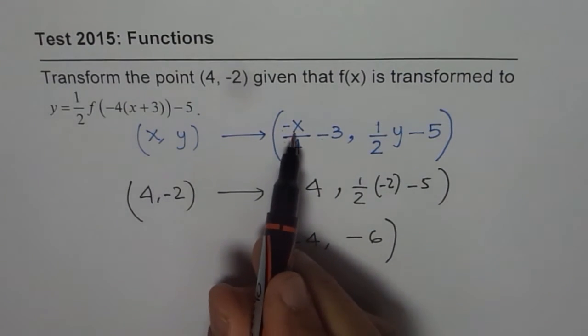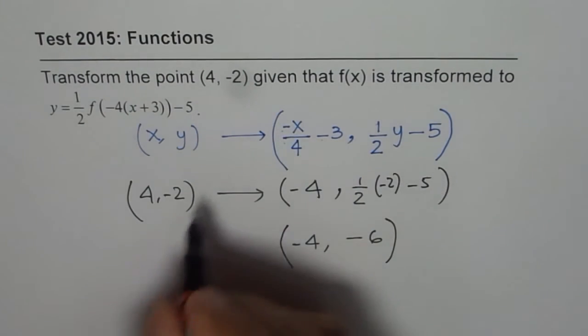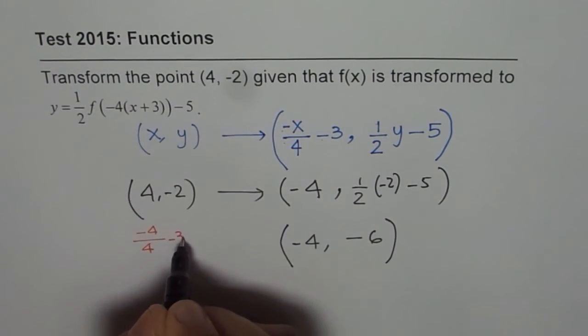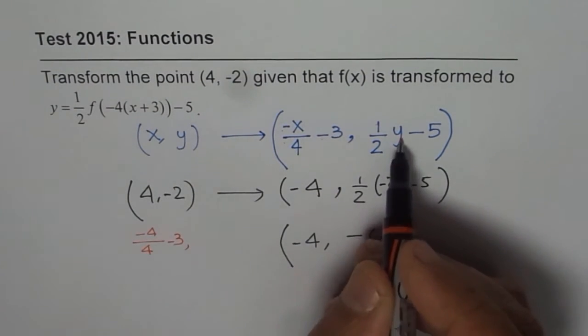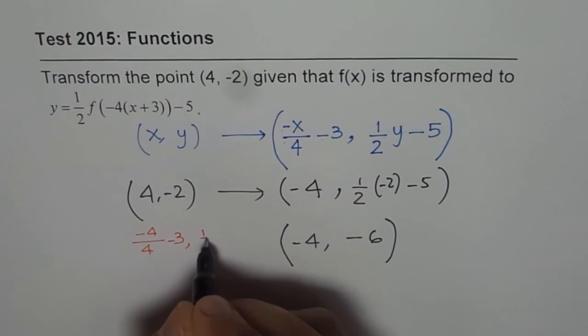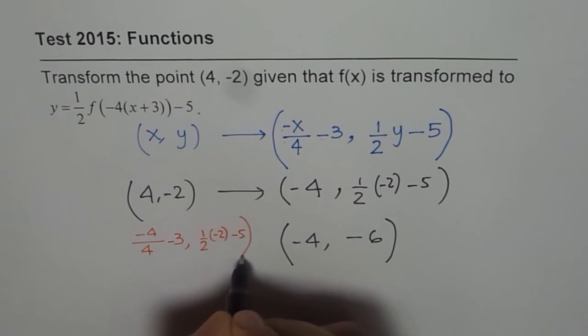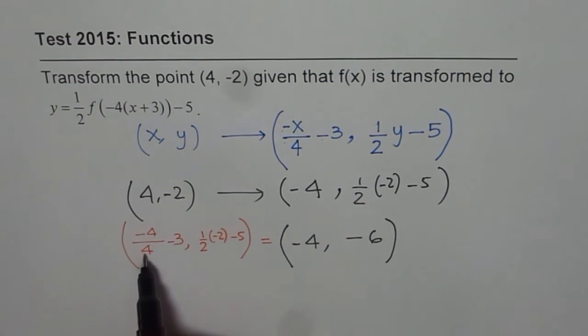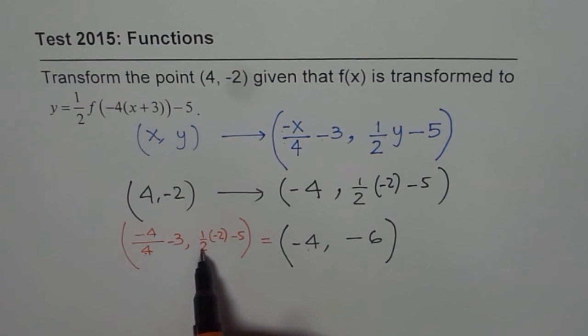So if I substitute 4 here, what do I get? I will get minus 4 divided by 4 minus 3. And if I substitute minus 2 here, what do I get? I get half minus 2 minus 5. So minus 4 divided by 4 is minus 1, minus 1 minus 3 is minus 4, minus 1 minus 5 is minus 6. So that is how you get your point.